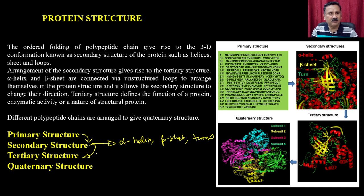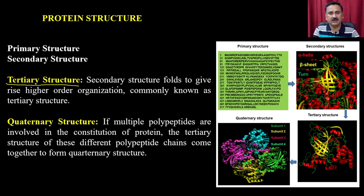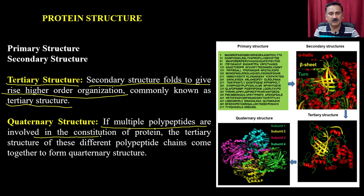In the tertiary structure, secondary structures fold to give a higher-order organization. Quaternary structure is present when multiple polypeptides are involved and their tertiary structures come together. Tertiary structure is a very complicated structure of a protein where many secondary and super-secondary structures come together, giving rise to the tertiary structure.